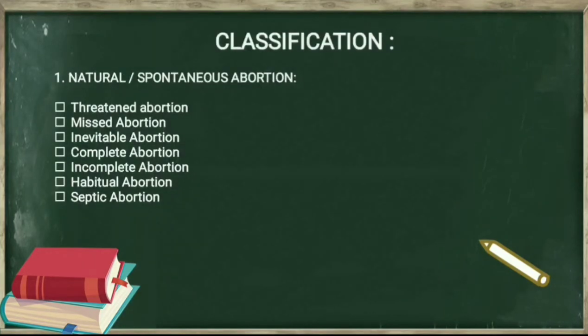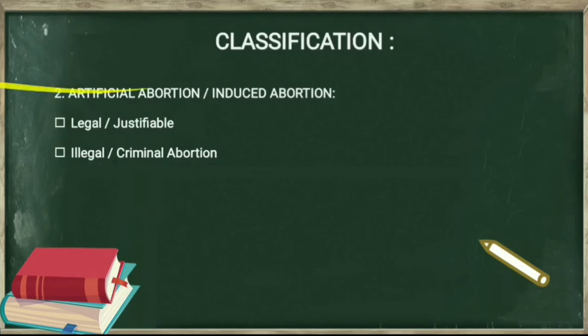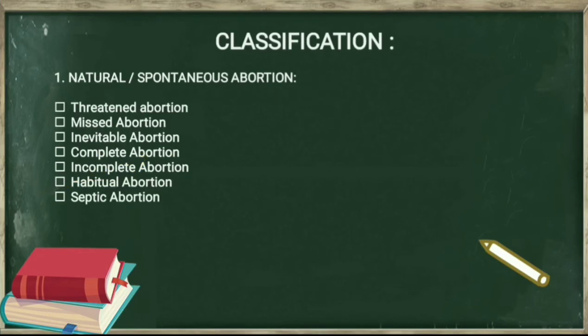Classification of abortion: there are two classifications — first, natural abortion or spontaneous abortion; second, artificial or induced abortion. Subcategories of natural abortion are: threatened abortion, missed abortion, inevitable abortion, complete abortion, incomplete abortion, habitual abortion, and septic abortion. Artificial or induced abortion is subcategorized as legal or justifiable abortion, and illegal or criminal abortion.